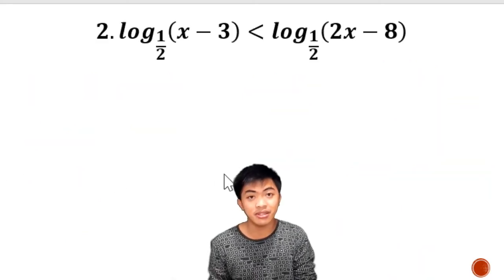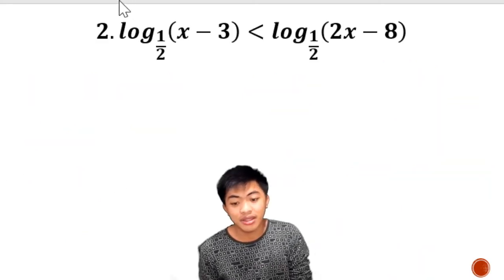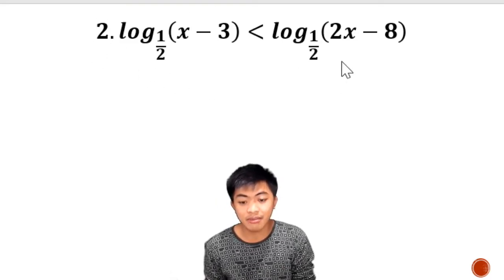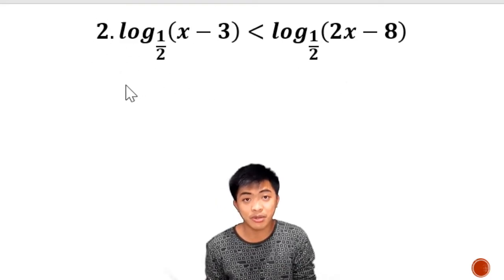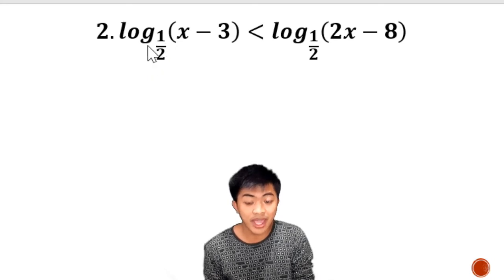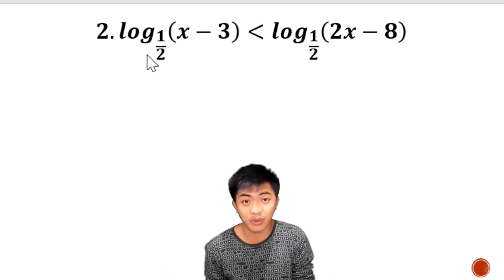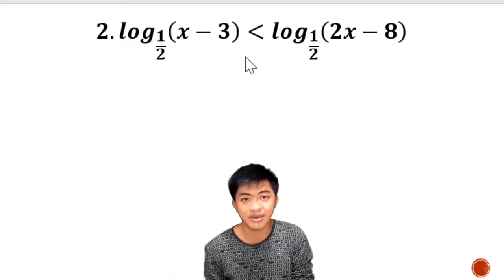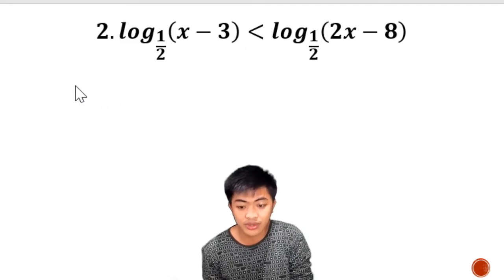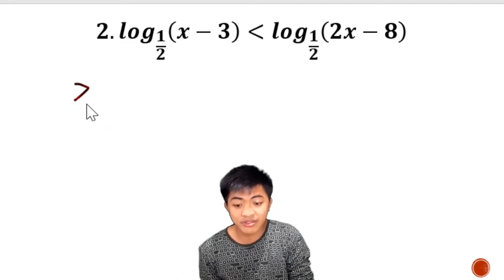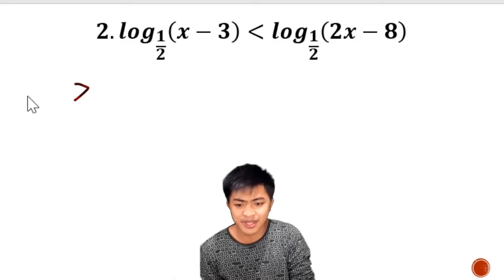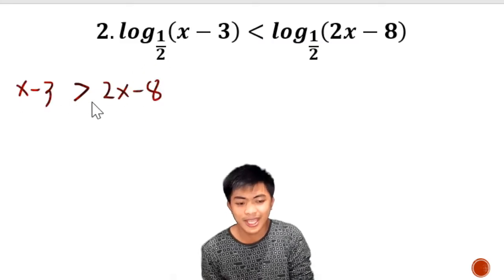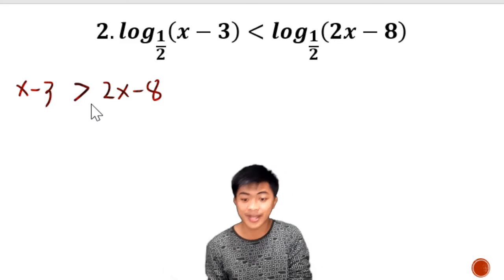Next example. The base here is in between 0 and 1, so we use Property 2 and reverse the direction of the inequality symbol. If the original inequality is less than, we change it to greater than. After reversing the inequality, we copy the arguments and proceed to solve for x.